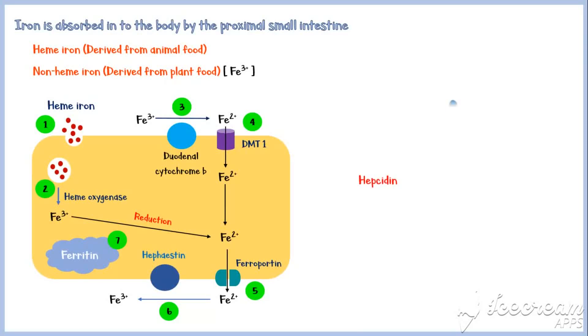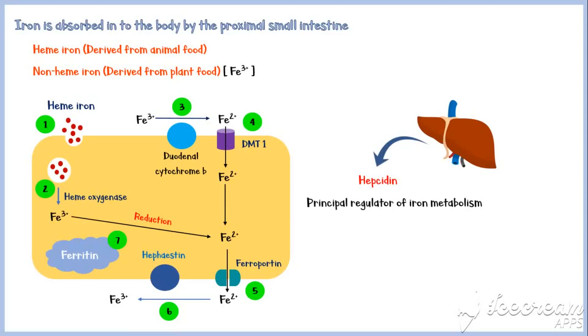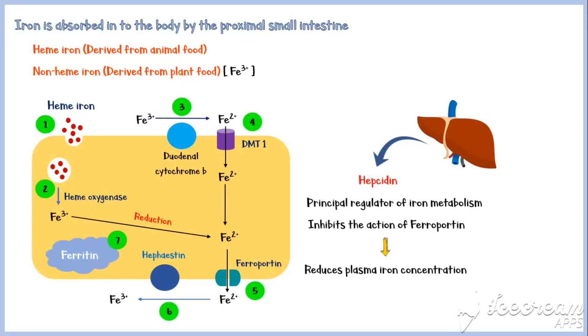Hepcidin, a peptide synthesized by the liver, is the principal regulator of iron metabolism. Its main function is to inhibit the action of ferroportin and thereby reduce the plasma iron concentration when elevated.